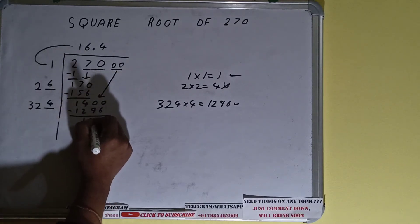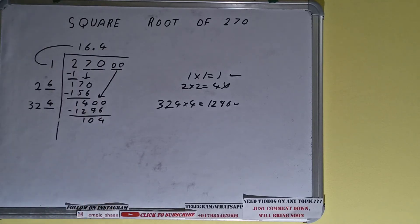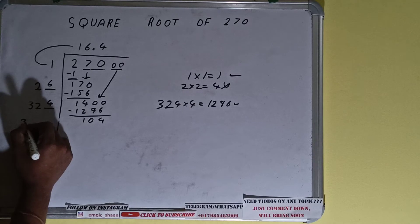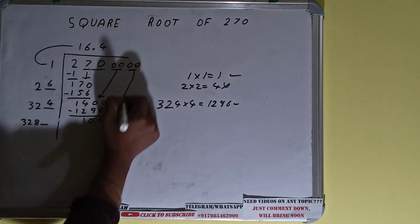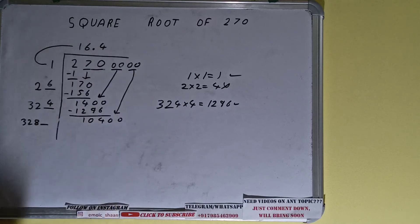And we'll be having 104. Now 324 into four we did, right? So add both. So 324 plus 4 will be 328 and one digit extra. Over here bring one more pair of zeros down and the number will become as 10,400.